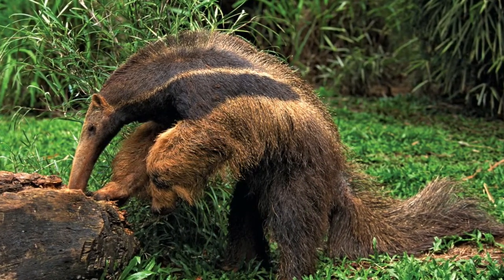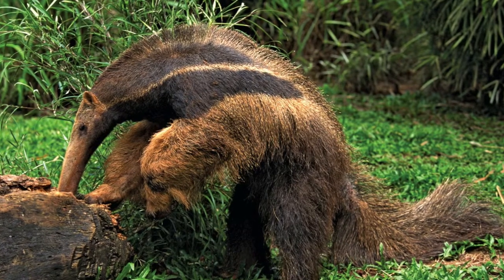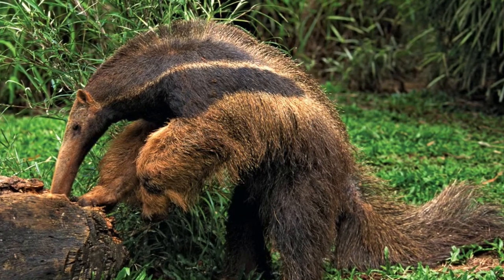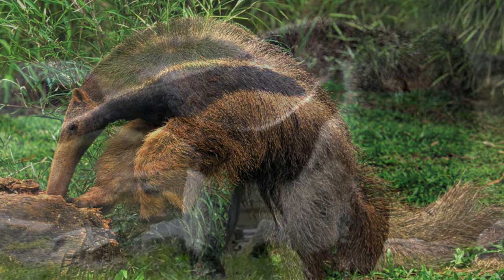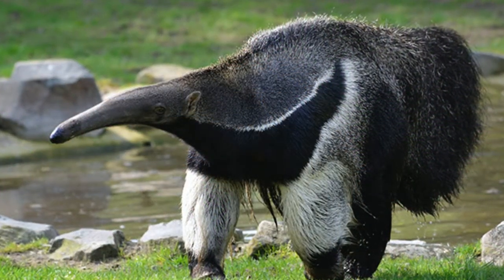Lesser anteaters have tan, black, or tan and black coats. They live in trees and feed at night. They use their long nearly hairless tails to climb on tree branches.